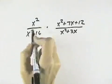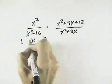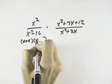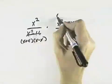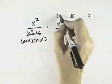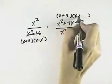The numerator here is already factored, but here I have the difference of squares, so I can express it as the sum and difference of their square roots. Here we have a trinomial, so I'll break it into its two factors, which will be x plus 3 times x plus 4.